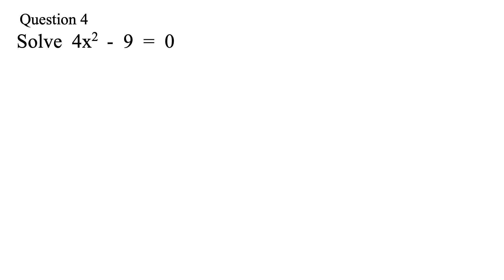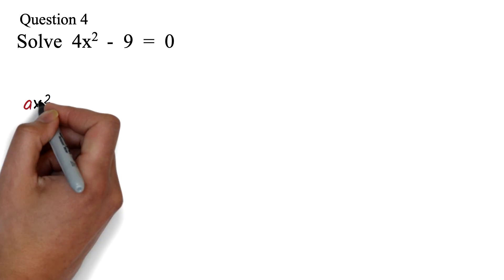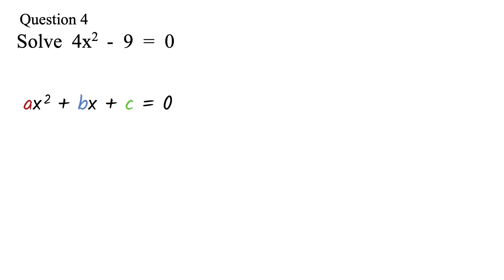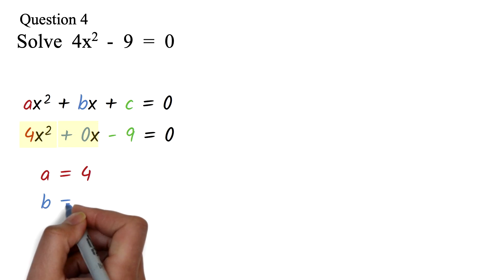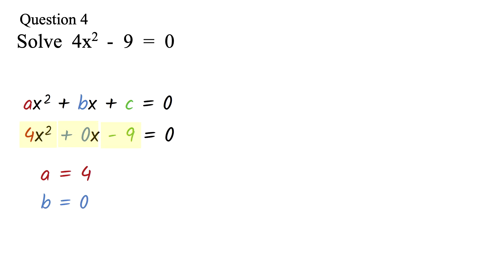Let's take our next question. Question 4: Solve the quadratic equation 4x squared minus 9 equals 0. We will be using the quadratic formula. Please note that the quadratic formula will not be the easiest way to solve a question like this, but let's look at it — then we will look at a better way. We make sure the equation is in the form ax squared plus bx plus c equals 0. This doesn't have an x term. We can represent it by 0 and still use the formula: 4x squared plus 0x minus 9 equals 0. So a equals 4, b equals 0, and c equals negative 9.